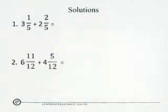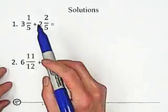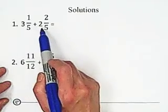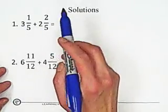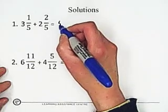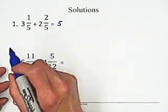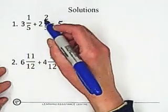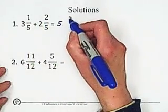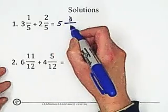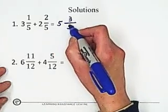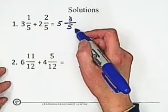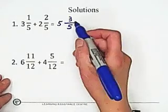Solution. The first question: add the whole number portion, 3 plus 2 equals 5. Because of same denominator, just add the numerators: 1 plus 2 equals 3. Keep denominator unchanged. So 5 and 3 over 5 — it is not necessary to simplify.